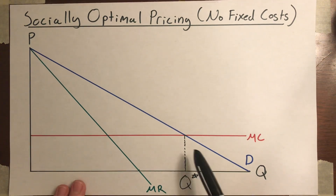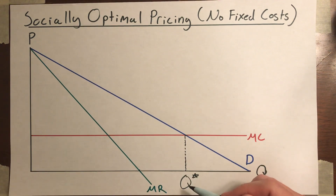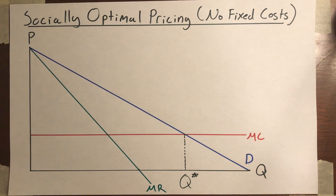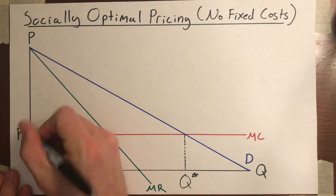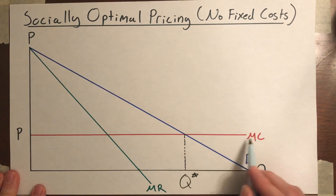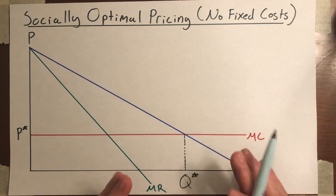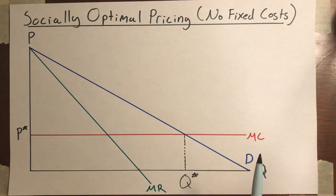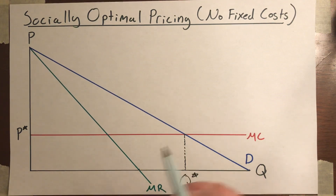So what would happen if they did this? How could you get this level of output? Well, that would occur if the monopolist set their price equal to the marginal cost per unit — which, remember, is what happens in the long run in a perfectly competitive market, where firms set their output up to the point where price is equal to marginal cost.